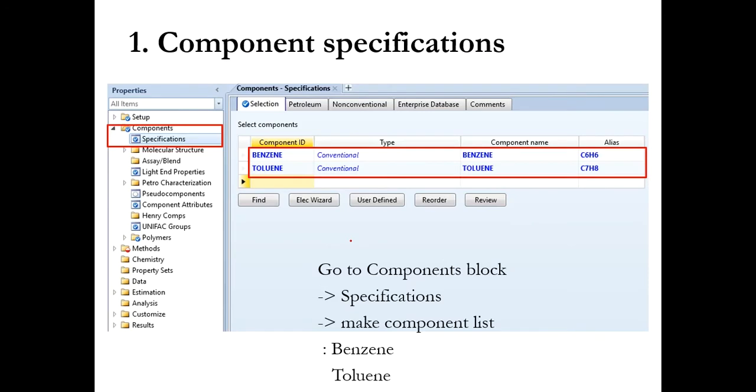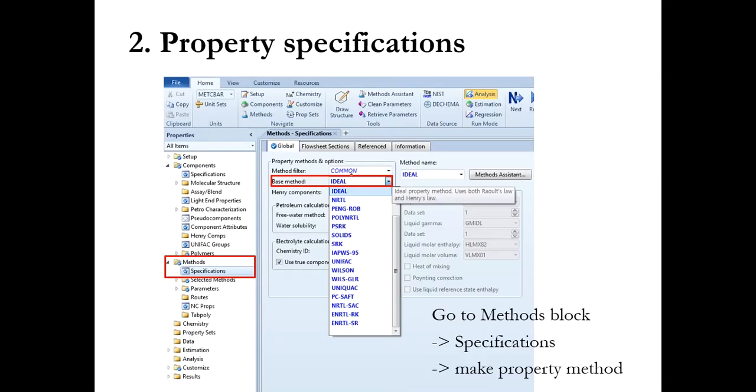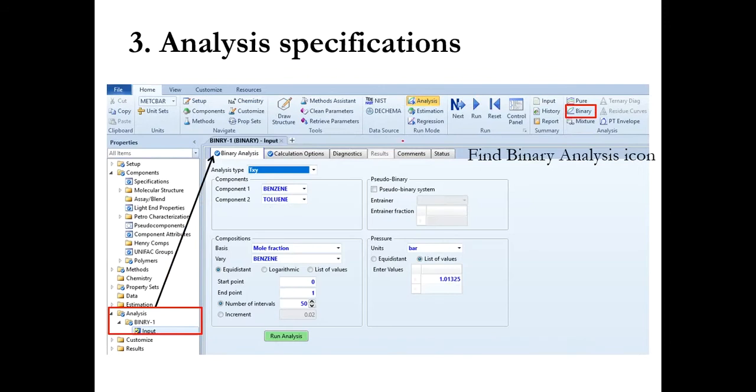So our first task as you know is to add the components first. We will first add benzene and toluene in the component ID, then we will select the ideal property package, and then if you remember in our previous exercises especially in PT diagram we had selected pure here but it was a single component, pure component.